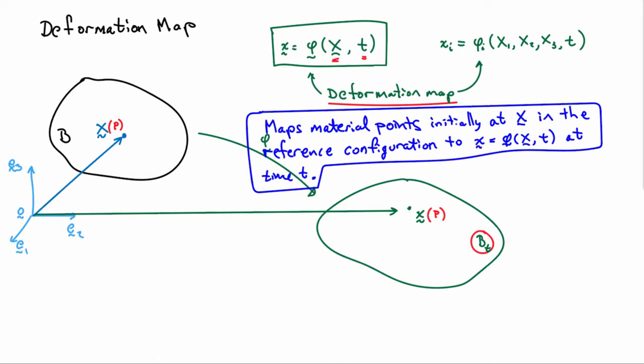Another way of saying what the deformation map does is it maps material points initially at location capital X in the reference configuration of the body to little x at the time t. So the reference configuration is what you start with, and the configuration of the body after deformation is known as a spatial or deformed configuration.